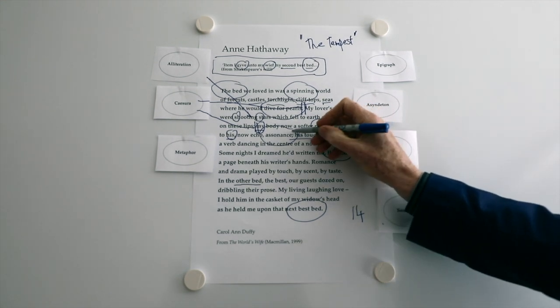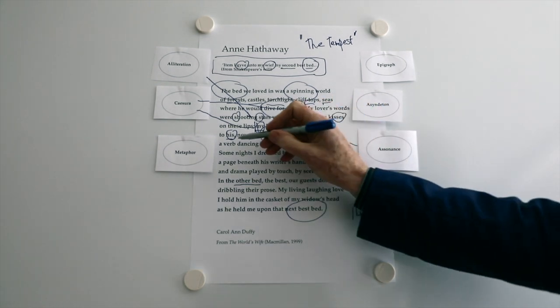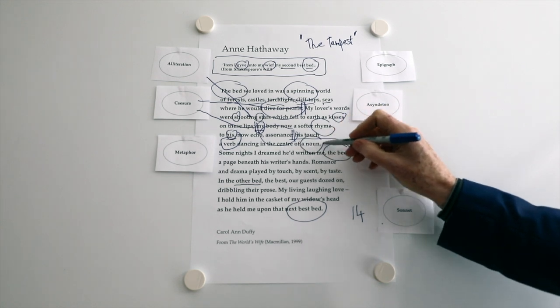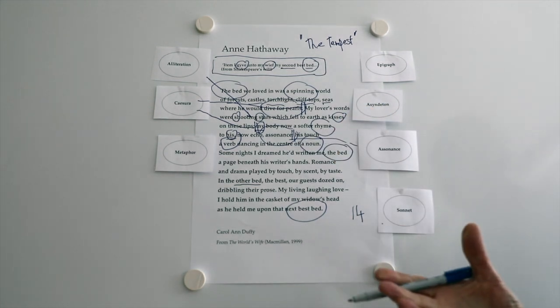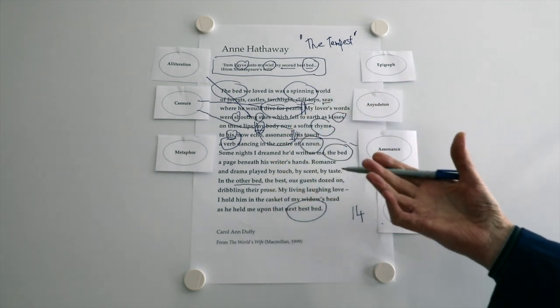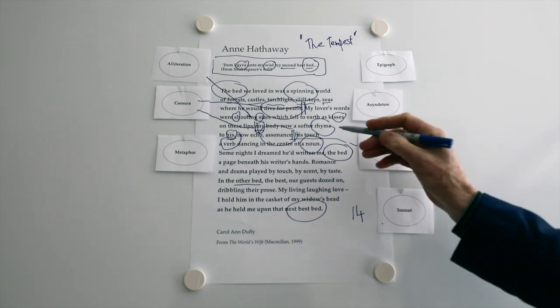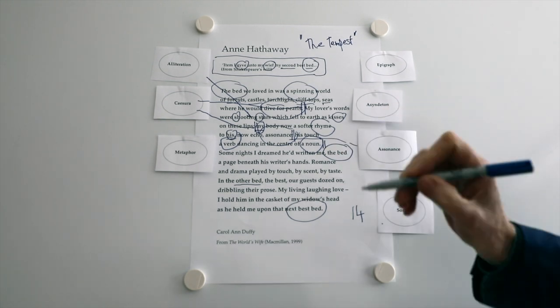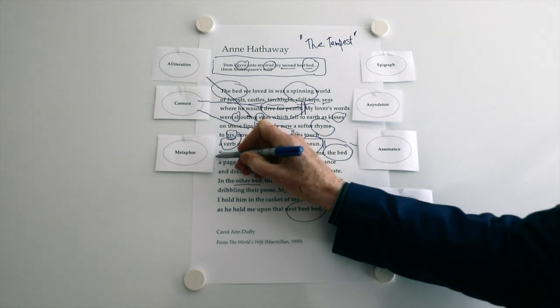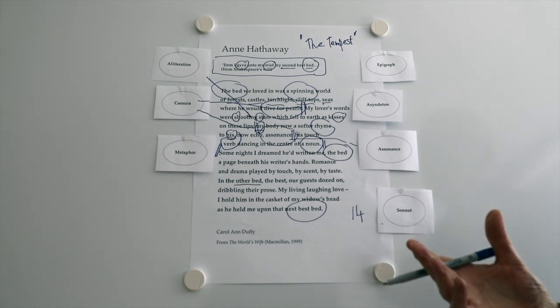Now, I've got another caesura. And then we move on to his touch of a verb dancing in the centre of a noun. Now, we all know what verbs and nouns are. Parts of speech. He's a writer. He needs to use those. And then the poem moves on to something slightly different. It finishes there. It pauses there with a full stop. And then some nights. So, we're on into, if you like, her memory, her dream, her nights in bed with him.